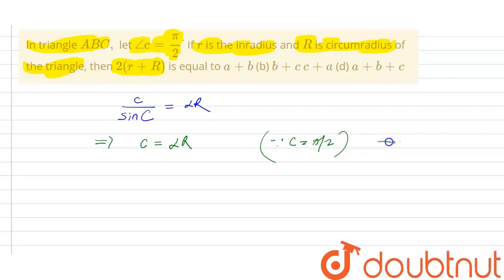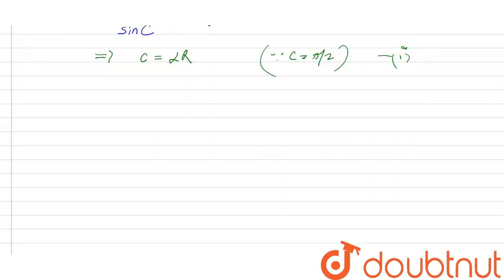So this is the first equation. Now what we know is that tan(C/2) is equal to small r divided by small s minus c. This is small c, and this capital C is the angle.